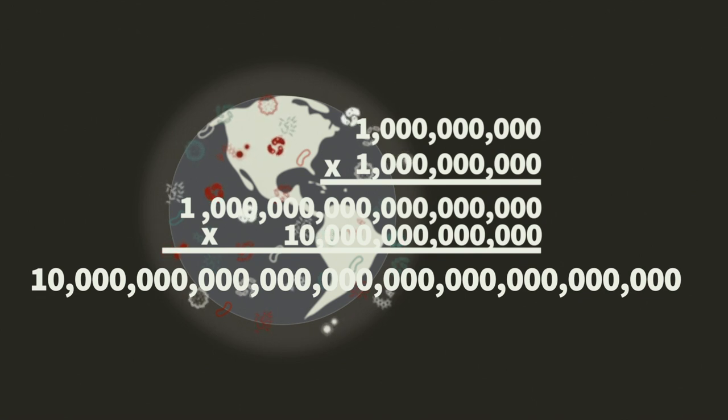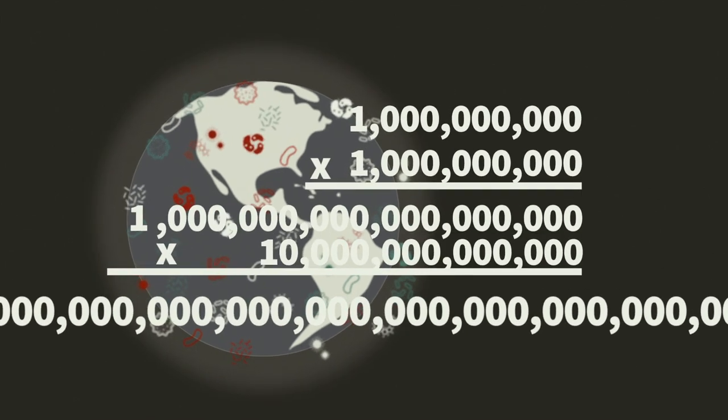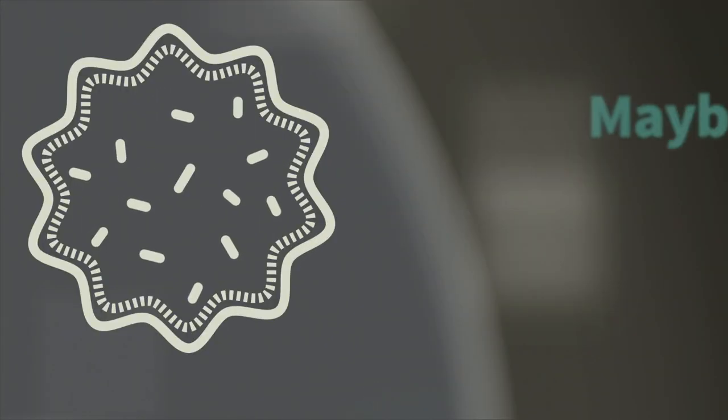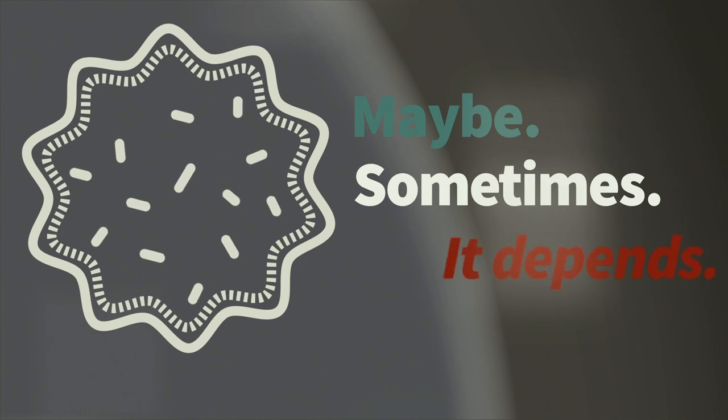Viruses come in many shapes and sizes, although they're all small and infect everything, including plants and bacteria. None of them work in precisely the same way. Is a virus a living thing? Maybe, sometimes. It depends on location.